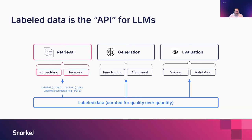The focus for today's webinar is on retrieval. We'll be taking a strong look at embedding and indexing as it relates to improving our context and ultimately our responses. The examples include labeled context pairs and labeled documents — these are the means by which we can curate the data necessary to optimize retrieval.